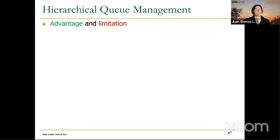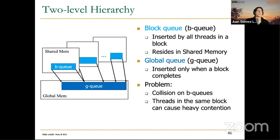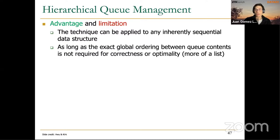Advantages and limitations of this hierarchical queue management: this technique can be applied to any inherently sequential data structure as long as the exact global ordering between queue contents is not required for correctness or optimality. What this means is that when a local queue is ready and we copy it to the output queue, we don't know in advance exactly where it will land — we update the global variable with an atomic addition, which is associative and commutative, so the order doesn't matter. But this means the local queue could end up anywhere in the global queue.